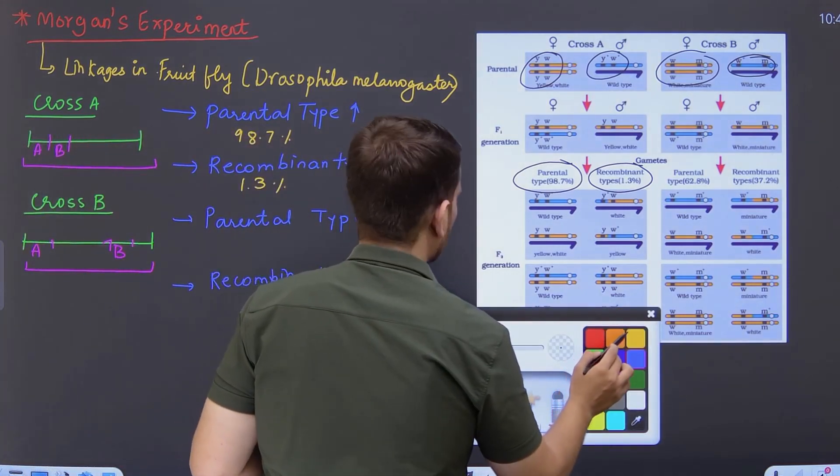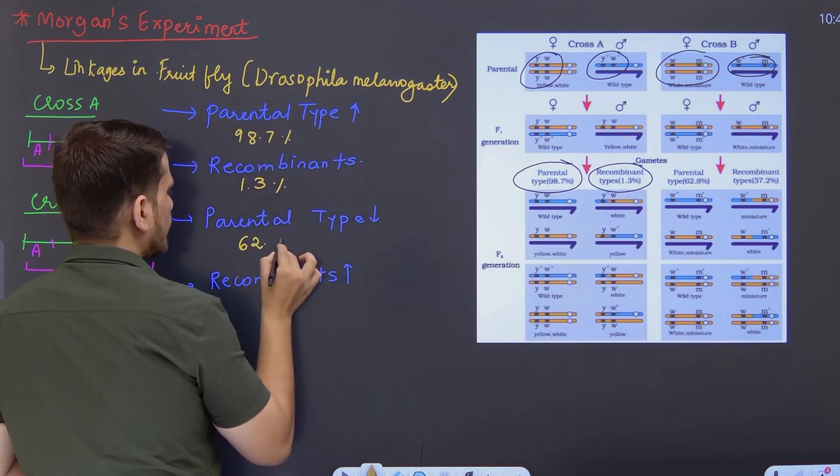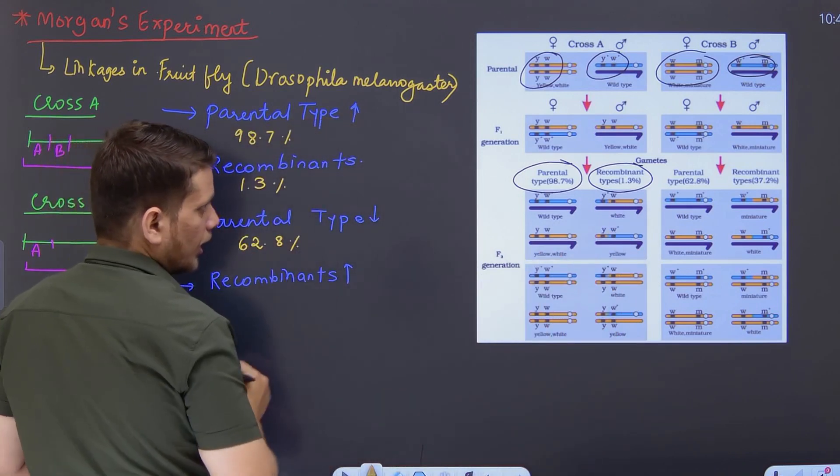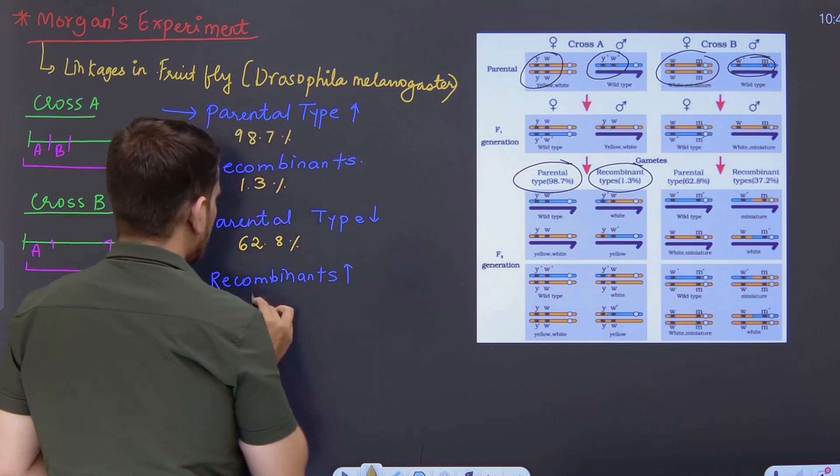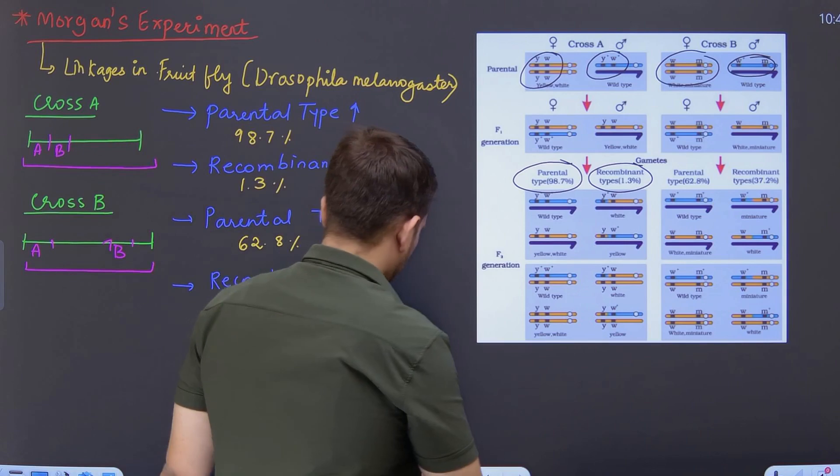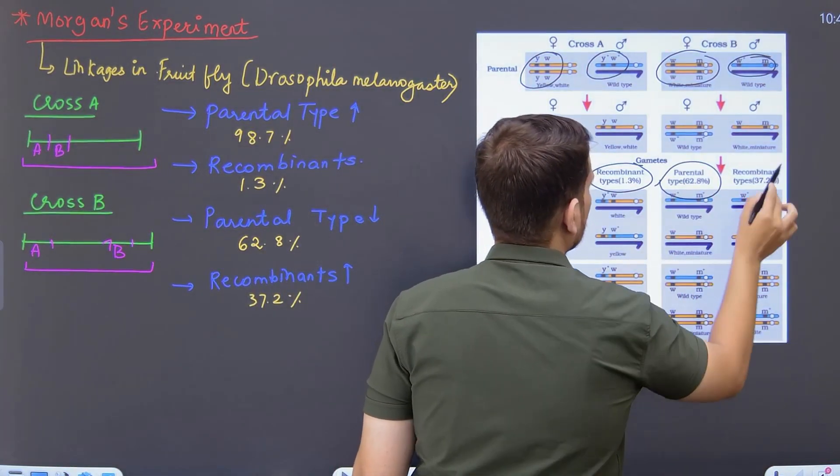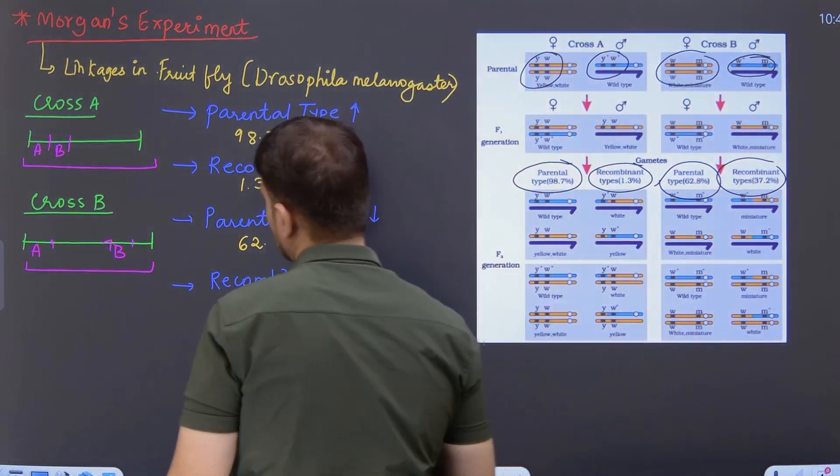Now, parental combinations students, how much did we get? We obtained the parental combination of 62.8%. And for recombinant, we obtained the combination or the percentage of 37.2%. So here parental is 62.8, recombinant is 37.2. What does this tell us?